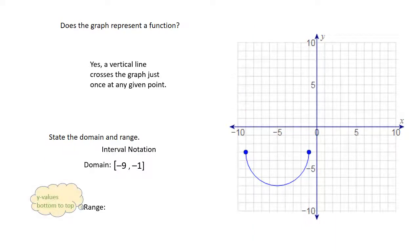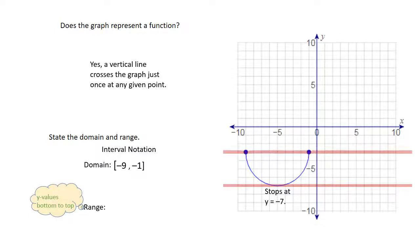For range, thinking about y values from bottom to top, the bottom value is −7 on this graph and the top value is −3. So in interval notation, we're going to show brackets with −7 for the bottom and −3 for the top.